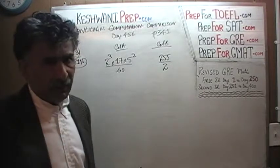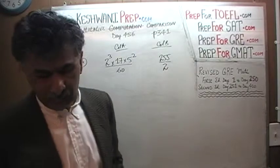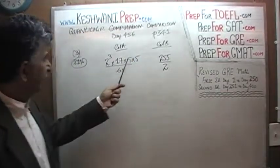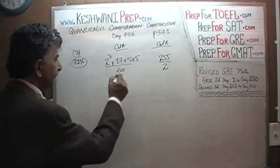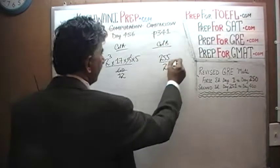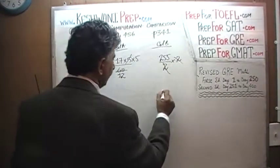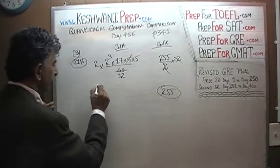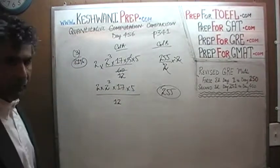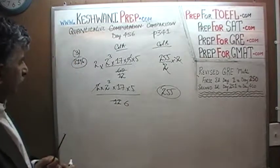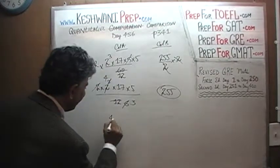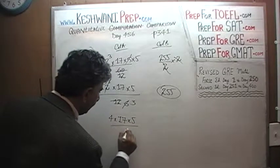2 cubed times 17 times 5 squared over 60 versus 255 over 2. I am not going to show all the baby steps — it would get annoying. 5 squared can be written as 5 times 5. We see a 5 on top and 60 on the bottom, so divide top and bottom by 5 — 60 becomes 12. Then multiply both sides by 2 to clear the denominator on column B; we are left with 2 times 2 cubed times 17 times 5 over 12 versus 255. Divide top and bottom by 2 so 12 becomes 6. There is a 2 cubed which is 8 and a 6 — divide again: this becomes 3 and 2 cubed becomes 4. So we are left with 4 times 17 times 5 over 3 versus 255.